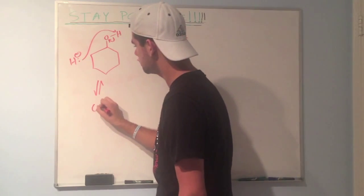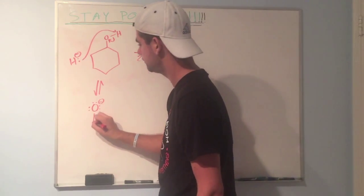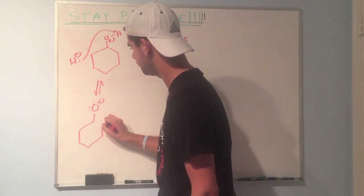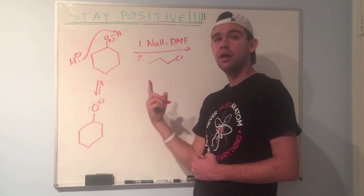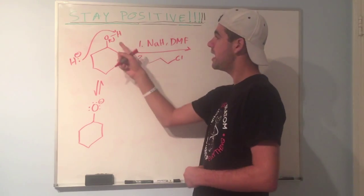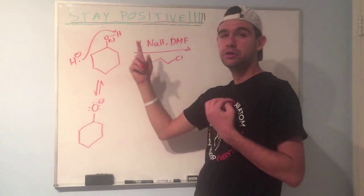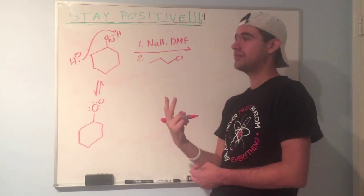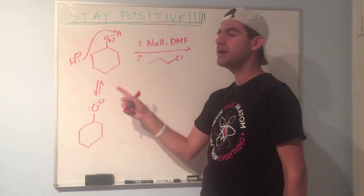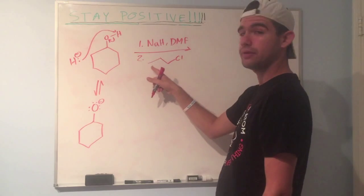And now we just made an alcohol into a good nucleophile because we have oxygen with a full negative charge. In the previous video we talked about that being one of two ways we can make an alcohol into a reactive species. One is making it a good nucleophile, the other is making it a good leaving group.